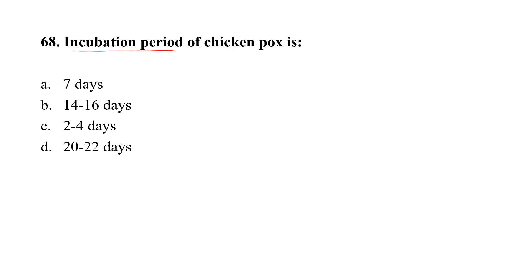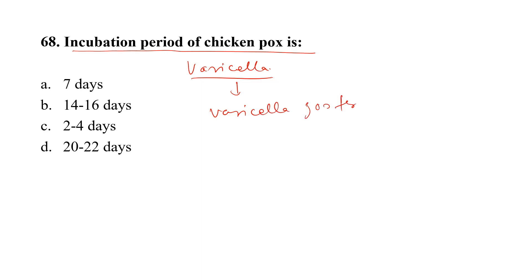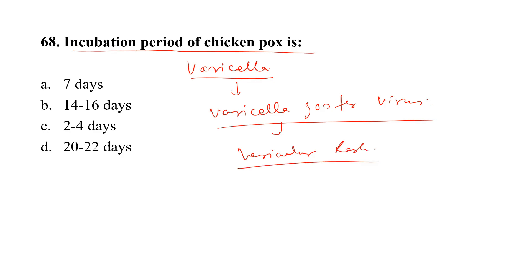Question number 68. Incubation period of chicken pox is: Option A, 7 days; Option B, 14 to 16 days; Option C, 2 to 4 days; Option D, 20 to 22 days. Chicken pox, also called varicella infection, is characterized by vesicular rash and may be accompanied by fever or malaise. The incubation period is 14 to 16 days. The correct option is B.